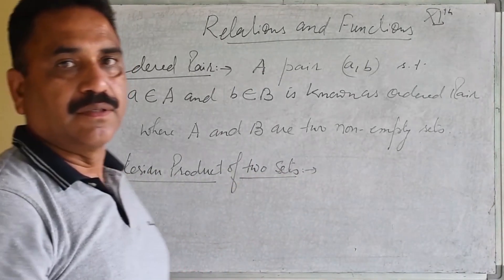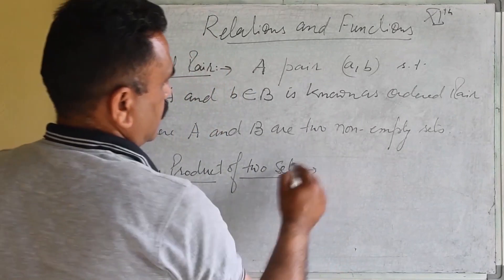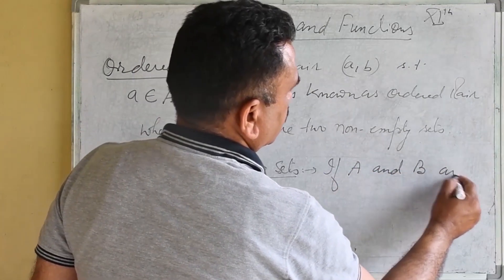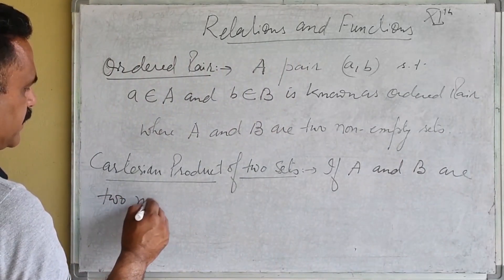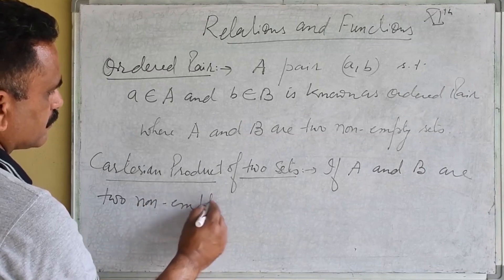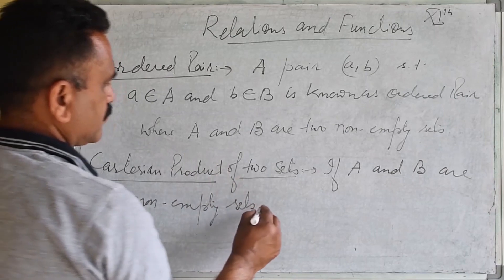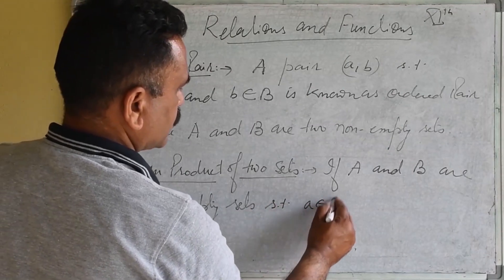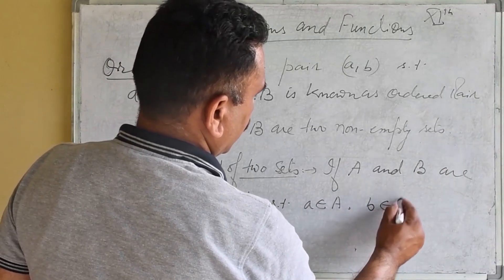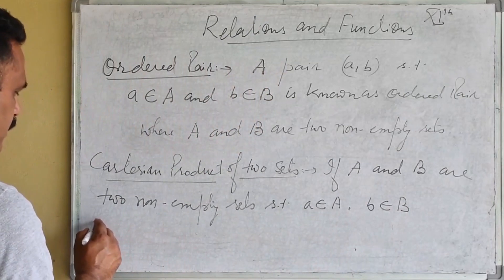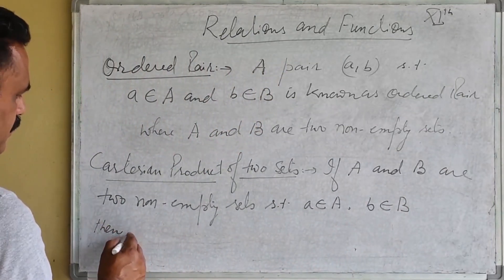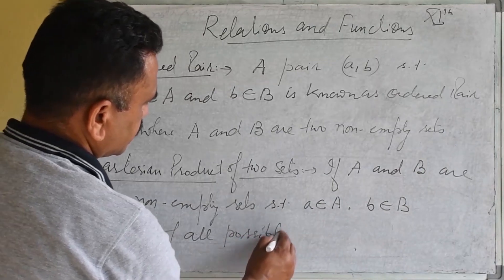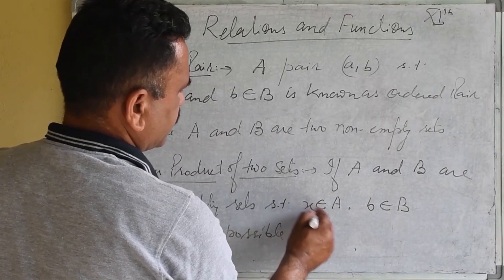Cartesian product of two sets: if A and B are two non-empty sets such that A belongs to set A and B belongs to set B, then the set of all possible ordered pairs is called the Cartesian product of two sets.